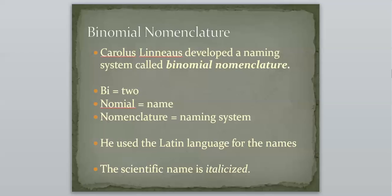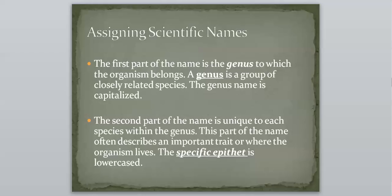And so that is how we name them. Binomial nomenclature, two-name naming system, invented by Carolus Linnaeus. It's always Latin names, and the names are always italicized. The first one is always capitalized. The second one is always lowercase. So we will review that, but just keep that in mind.